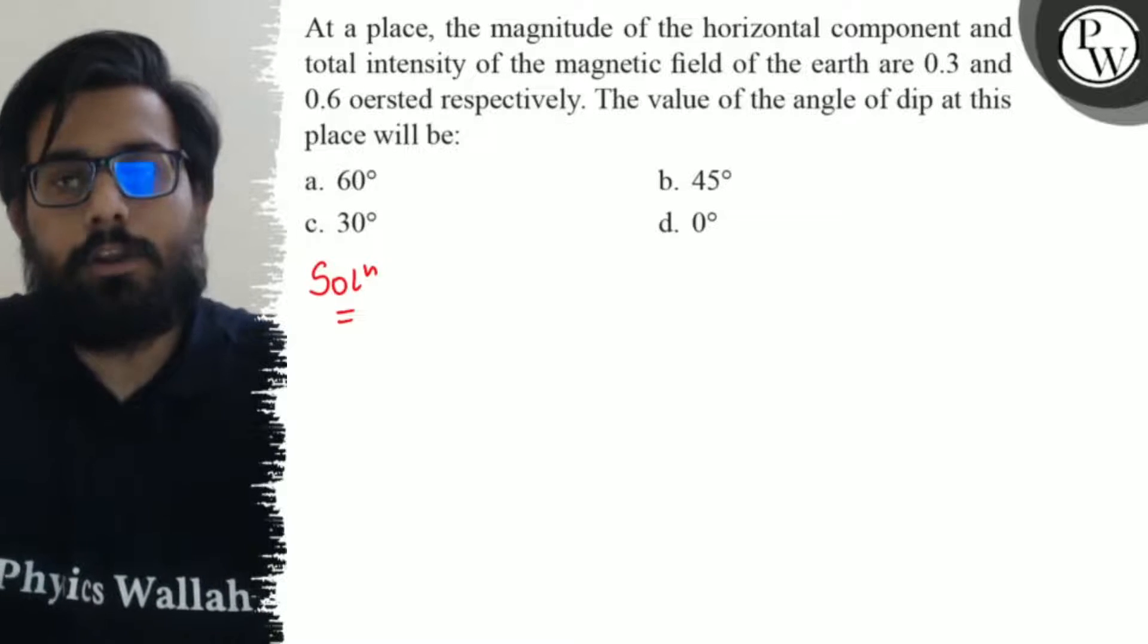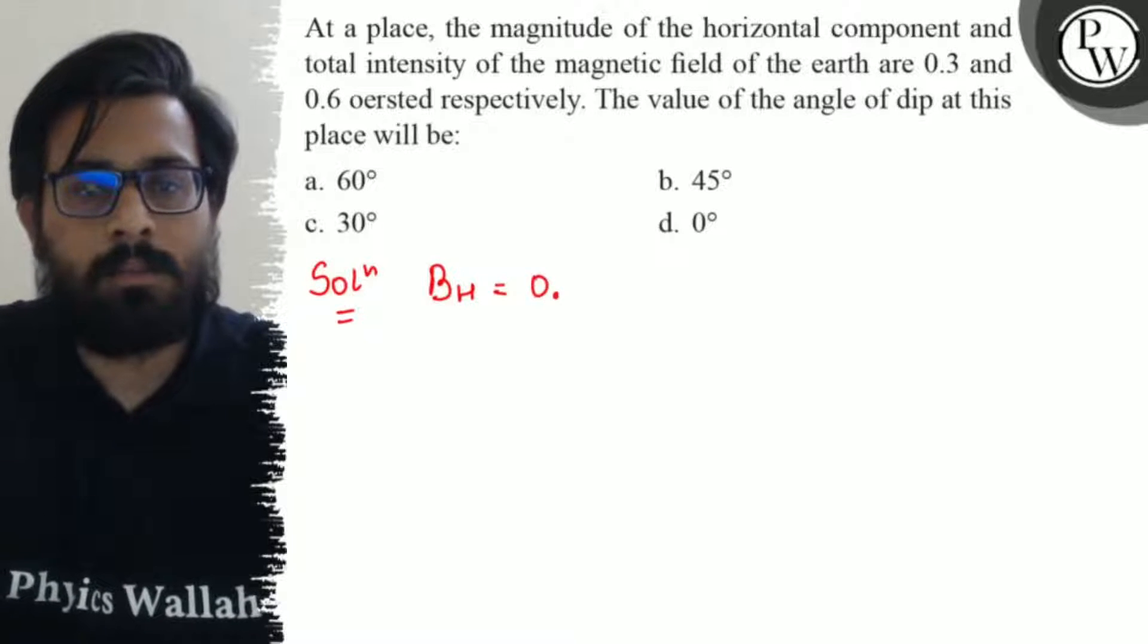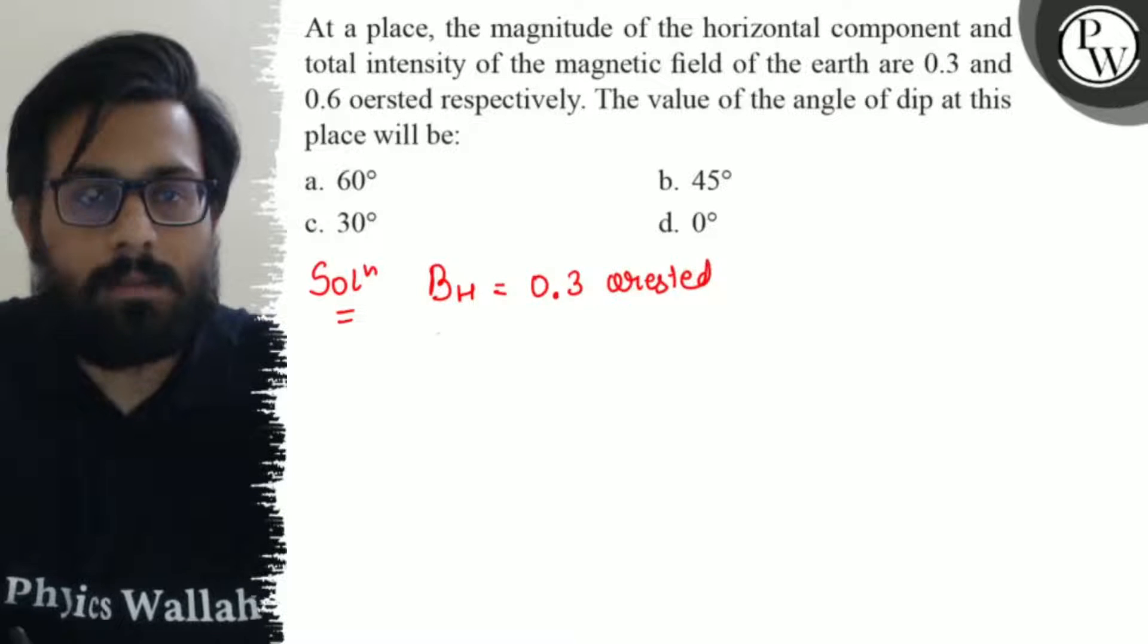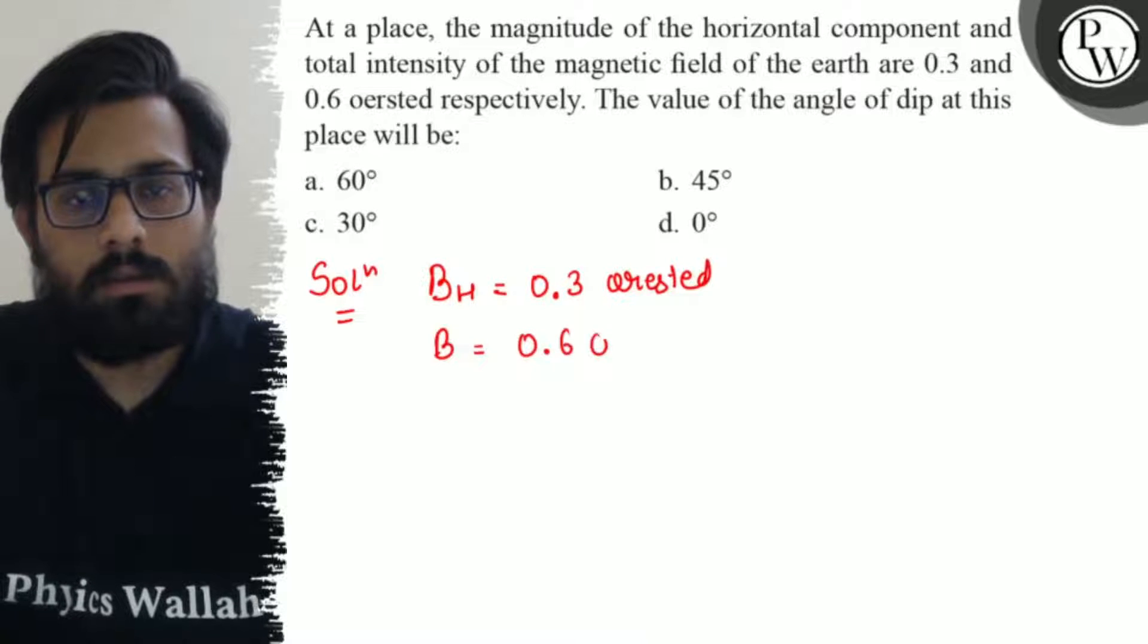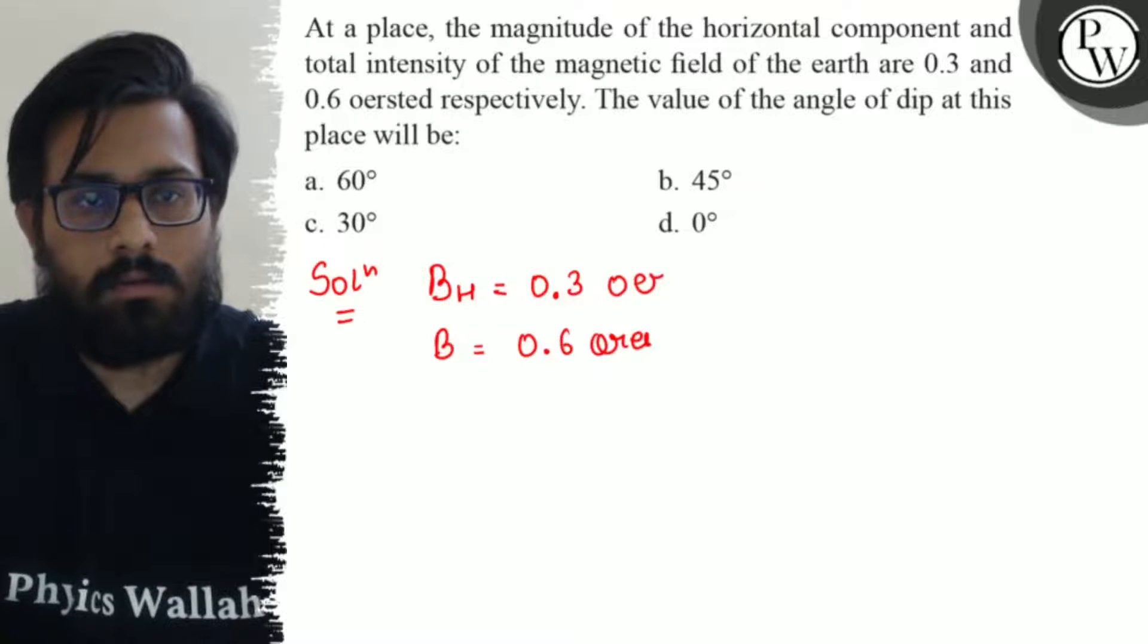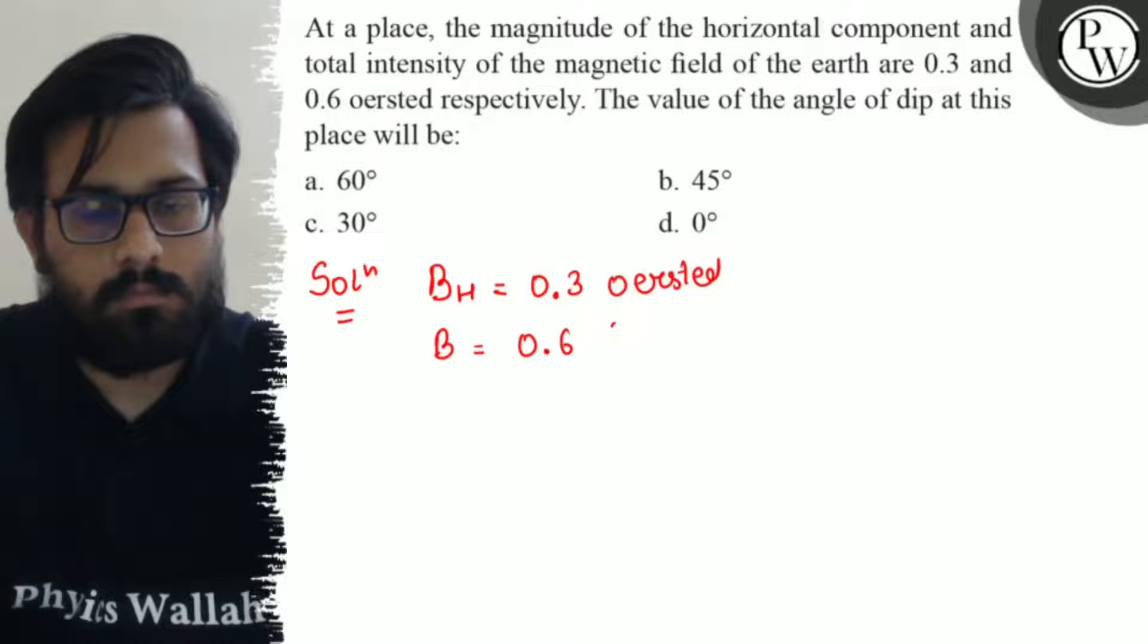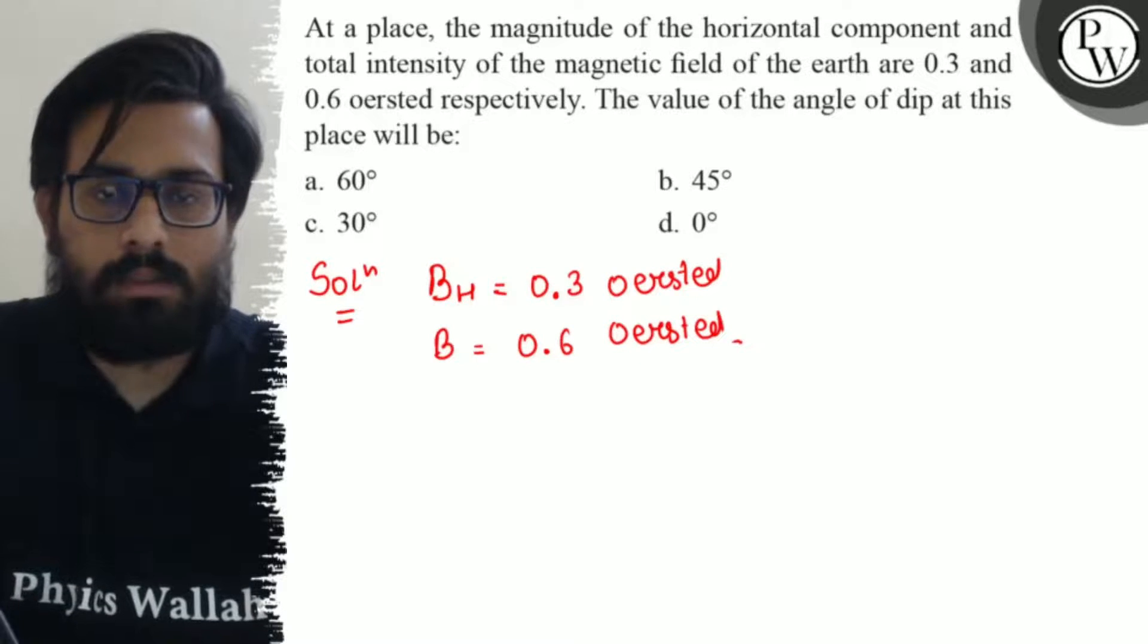So in this question, the horizontal component of the earth's magnetic field is given as 0.3 oersted and the total magnetic field intensity is given as 0.6 oersted. And we have to find out the angle of dip.